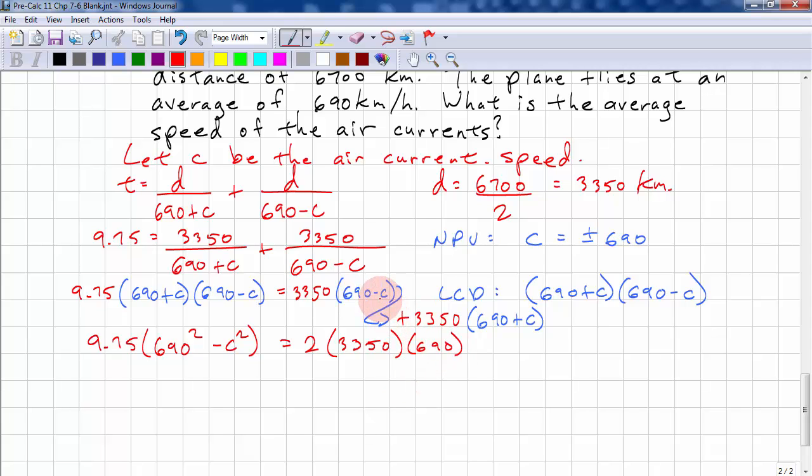So, we just have 2 times 3350 times 690. So, if we do minus C times this, we're going to have minus 3350C. And we have plus 3350C. So, they cancel out. So, we're not going to put that in. So, we have 690 squared minus C squared. And we're going to divide this side by 9.75. So, we get 4623000 divided by 9.75.